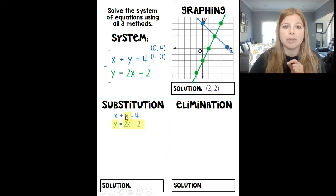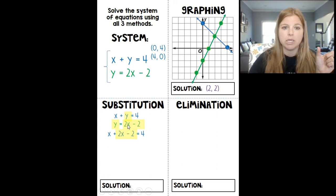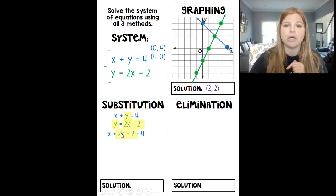So instead of this equation looking like x plus y equals 4, it's going to say x plus 2x minus 2 equals 4. Now, I want you to really see what's happening here. y is equal to the entire expression of 2x minus 2. So wherever I see y in my other equation, I'm going to substitute that all in. And now I've got just a basic multi-step equation to solve that we've been solving for years. So x plus 2x is 3x. I'm going to add 2 on both sides to get 3x equals 6, divide both sides by 3, and x equals 2.